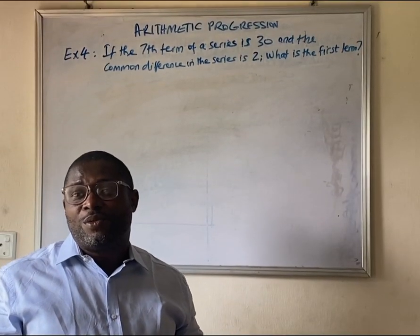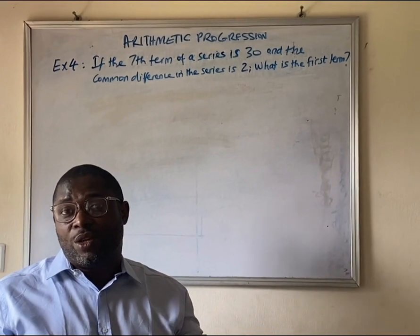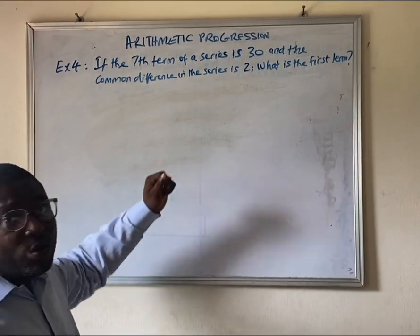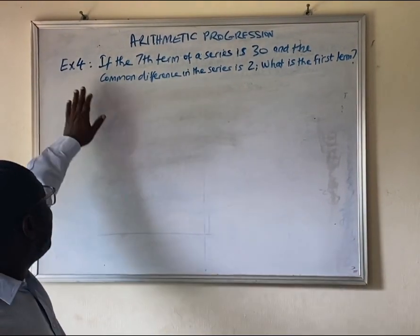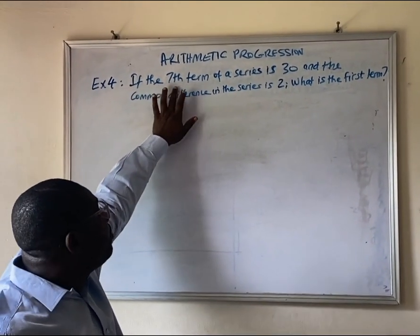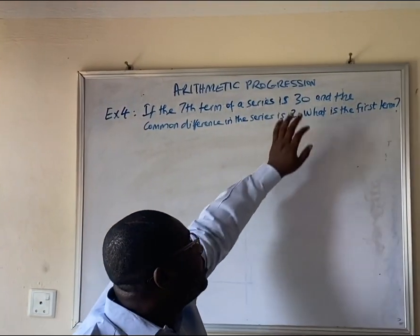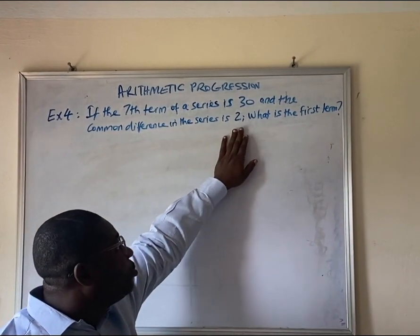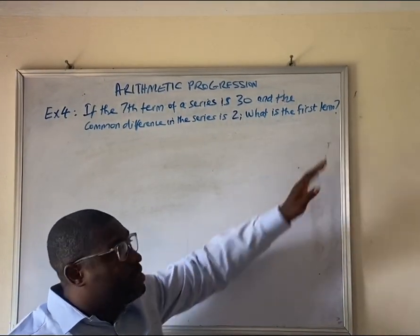Good afternoon. We want to look at another question in solving arithmetic progression. In this question, as you can see, we have example four. If the seventh term of the series is 30 and the common difference in the series is 2, what is the first term?